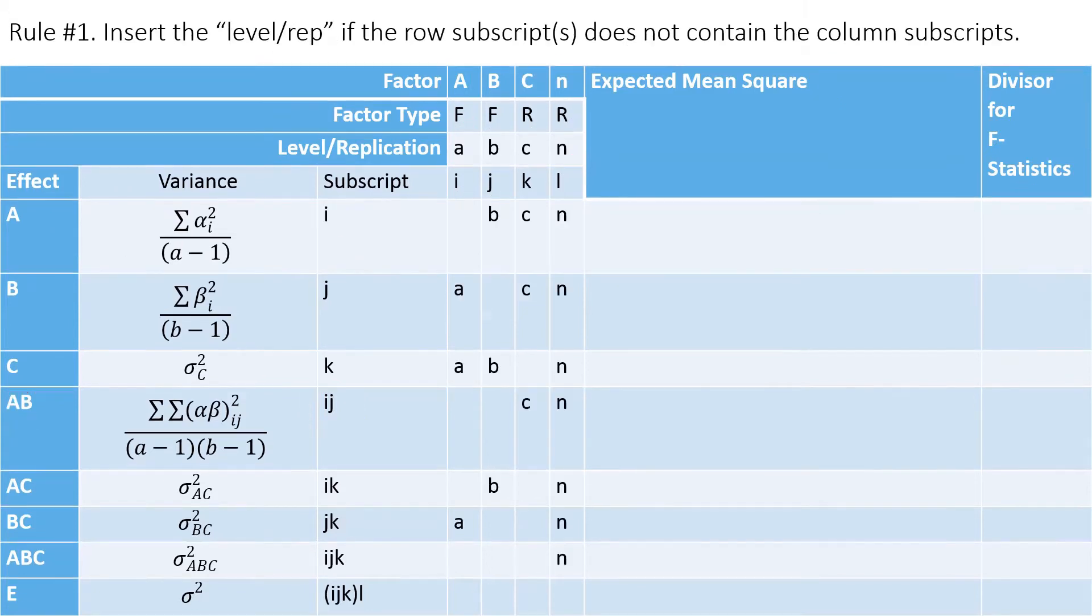Rule number one is if this row subscript does not contain the column, then type whatever that level or replication is. So for example, row subscript J does not contain I, so type A here. Row subscript J does not contain K, so type C here. Similarly, this is how this table was created.